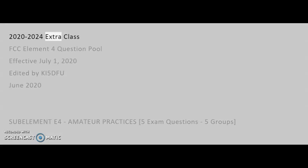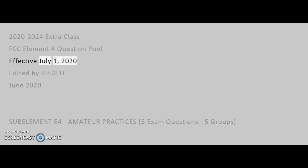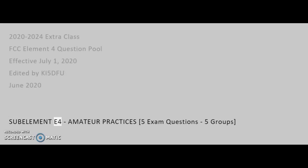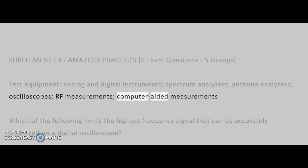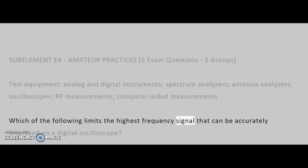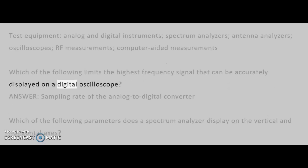2020-2024 Extra Class FCC Element 4 Question Pool, effective July 1, 2020. Edited by KI5DFU, June 2020. SubElement E4: Amateur Practices — 5 exam questions, 5 groups. Topics include: Test Equipment, Analog and Digital Instruments, Spectrum Analyzers, Antenna Analyzers, Oscilloscopes, RF Measurements, and Computerized Measurements. Which of the following limits the highest frequency signal that can be accurately displayed on a digital oscilloscope?